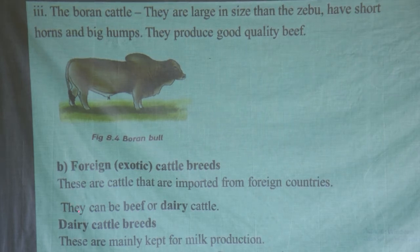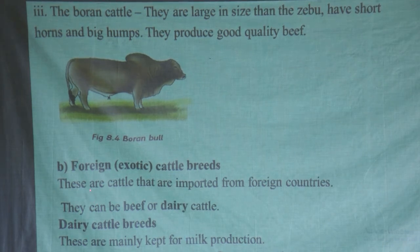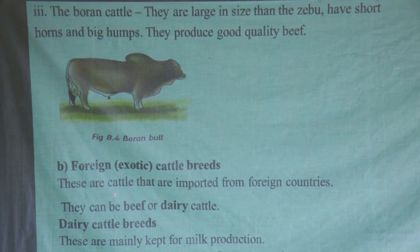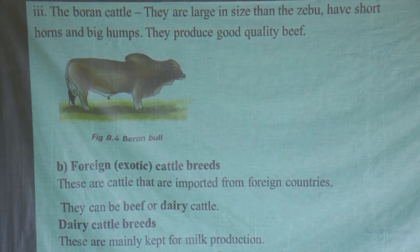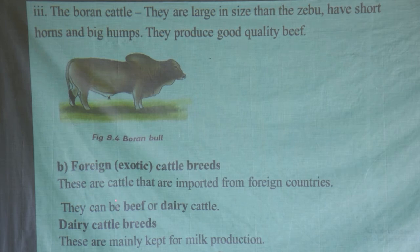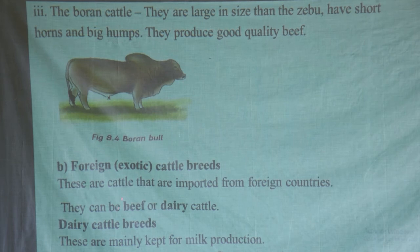Looking at exotic breeds, they are good meat producers and good milk producers. They are large in size compared to local breeds. They grow faster, which is an advantage. For dairy cattle breeds — those majorly kept for milk production — we can look at examples like the Friesian, the Jersey, the Guernsey, and the Ayrshire. These are the best ones for milk production. If asked which breeds to choose for milk production, simply mention the Friesian, Jersey, Guernsey, and Ayrshire.